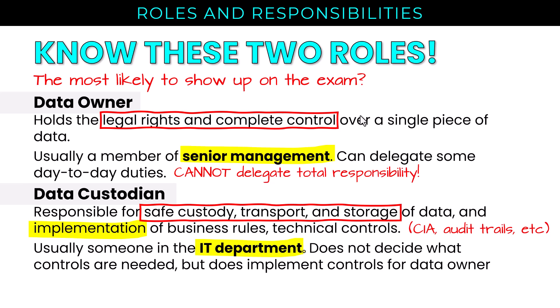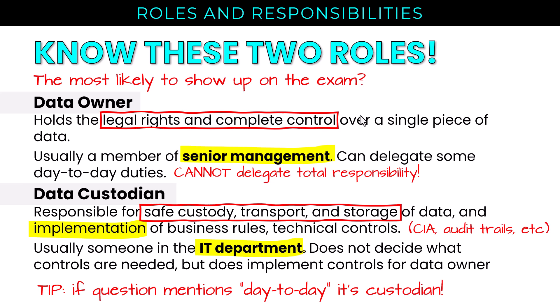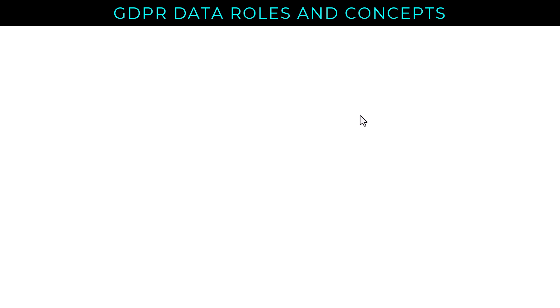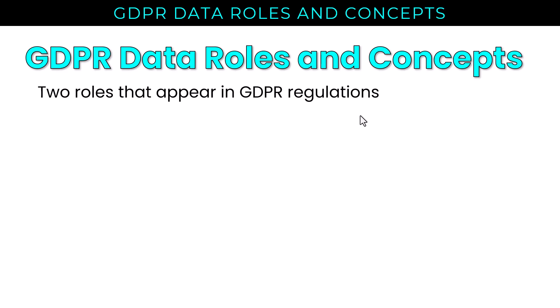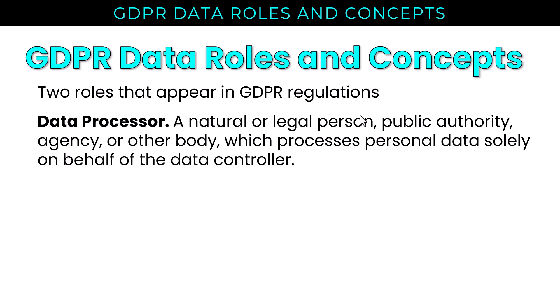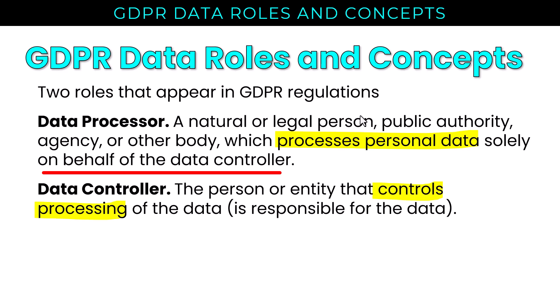If a question mentions day-to-day management, that's typically the data custodian. Looking at GDPR — a regulation which applies to any organization with customers in the European Union — GDPR does data roles a bit differently. There are two GDPR roles that also show up here. The data processor is described as a natural or legal person, public authority, agency, or other body which processes personal data solely on behalf of the data controller. The data controller is the person or entity that controls the processing of the data and is responsible for the data. Controller sounds a bit like data owner; processor sounds a bit like custodian. They're not exactly the same, but there are similarities, and these may appear on the exam.